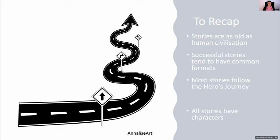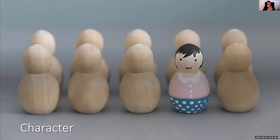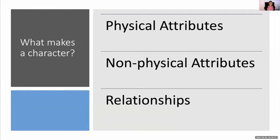Of course, all stories have characters, even if it's a lonely cleaning robot or a flying elephant. So what makes a character? They're probably made up of three different things: physical attributes, non-physical attributes, and the relationships they have with the world and other people.